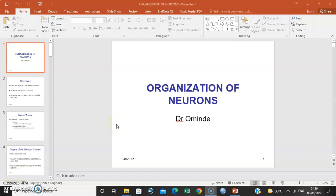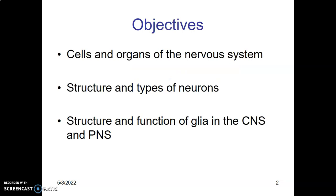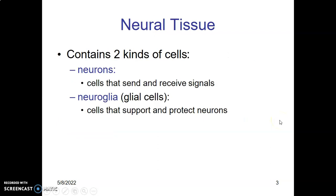Hello everyone. I'm going to discuss the organization of neurons and then we'll talk about some neuroglial cells — basically just the histology of the nervous system. Neural tissue contains two types of cells: neurons, which are the cells that actually send and receive signals, and neuroglial cells, which are support cells that mainly protect the neurons.